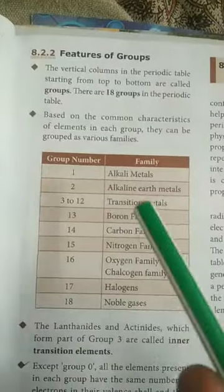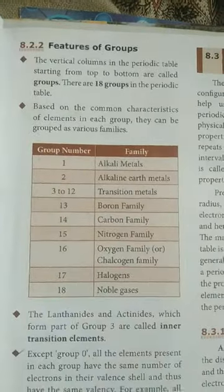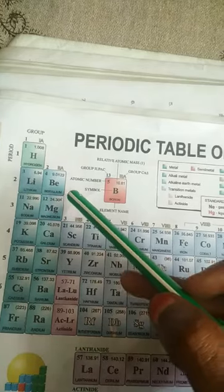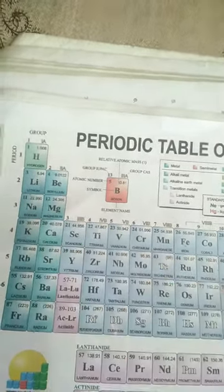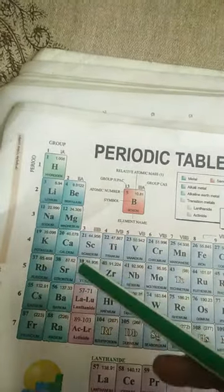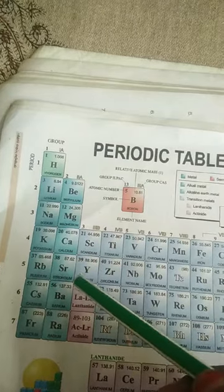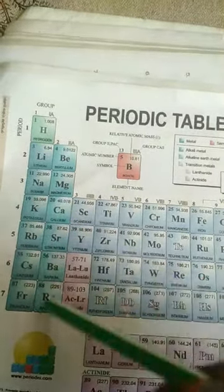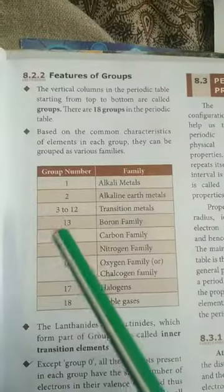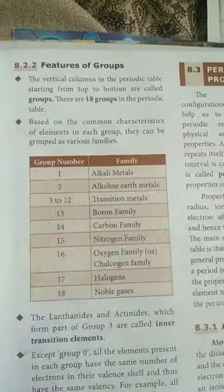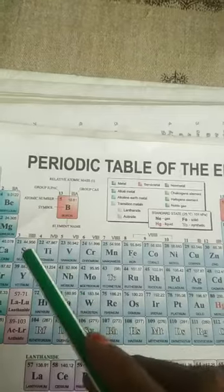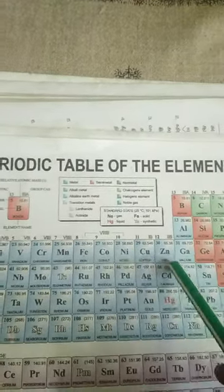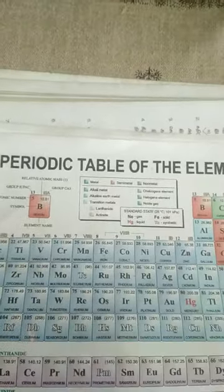Group 2 is the alkaline earth metals family — for example, beryllium, magnesium, calcium, and strontium. Groups 3 to 12 are the transition metals. These are groups three, four, five, six, seven, eight, nine, ten, eleven, and twelve.